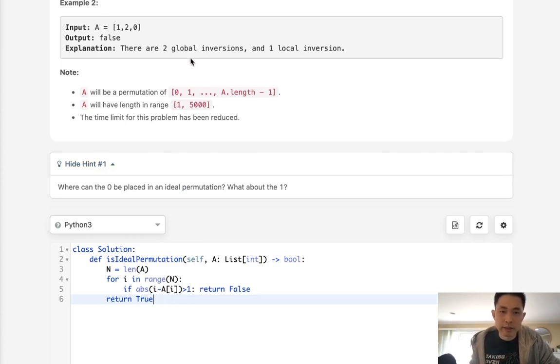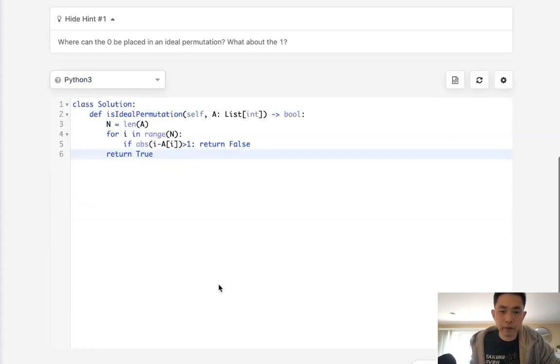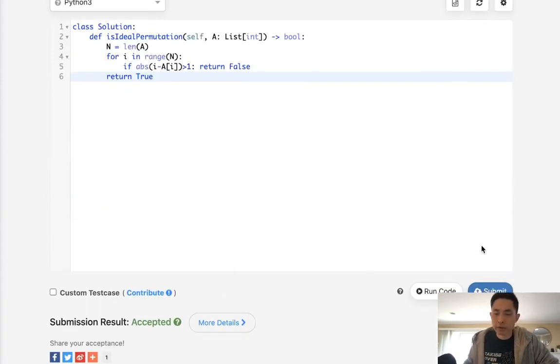And once you realize that you can kind of play around with the arrays and realize the difference between the i and the number itself can't be greater than one or else there's more than one global inversion. Okay all right hope that helps.